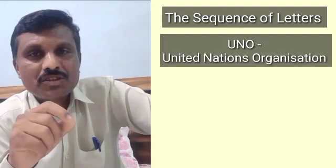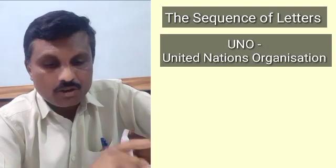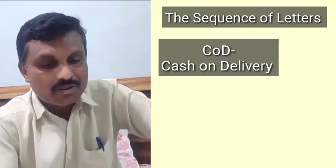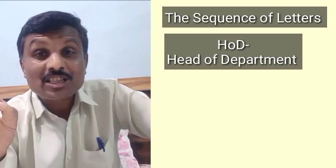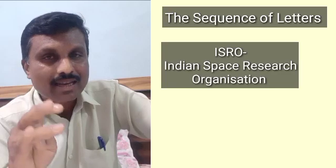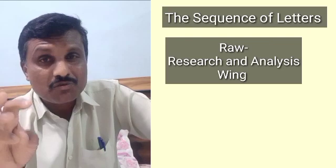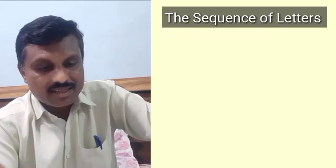For example, by taking a sequence of letters: United Nations Organization is called UNO; COD means Cash on Delivery; HOD means Head of the Department; ISRO stands for Indian Space Research Organization; and RAW stands for Research and Analysis Wing of India. This is called taking a sequence of letters together.